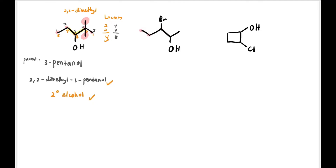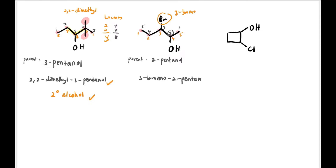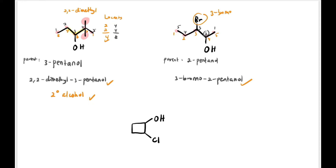Next compound has OH and Br, so OH wins. Counting gives five carbons; grey numbering gives OH at carbon 2 (preferred over carbon 4), so the parent is 2-pentanol. The bromine substituent falls at carbon 3, giving the full name 3-bromo-2-pentanol. The class of alcohol is secondary — two carbons are attached to the OH carbon.